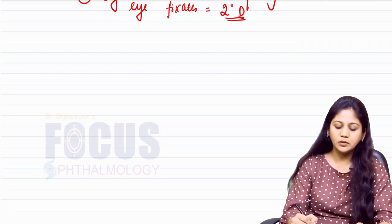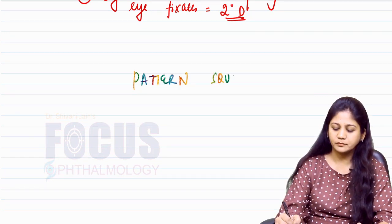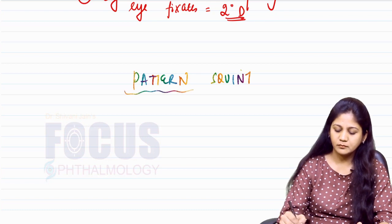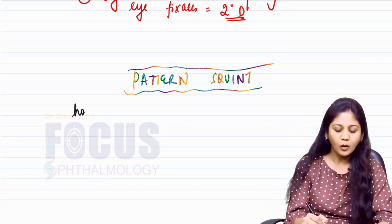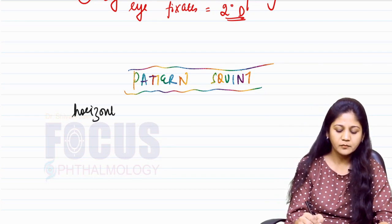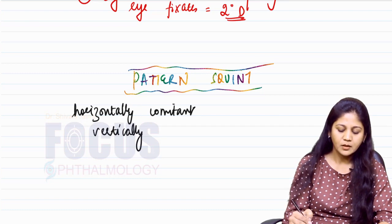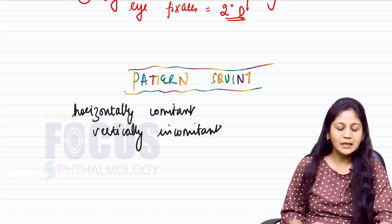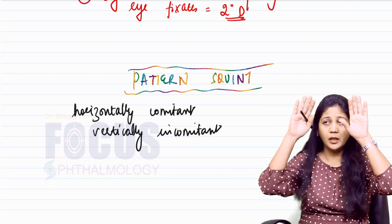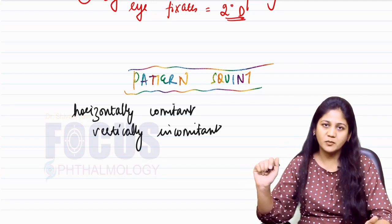Let us talk about pattern squints. The meaning of pattern squint is that these squints are horizontally comitant, but vertically they are incomitant. When the eye moves up or down, there is a change in the angle of measurement of squint.